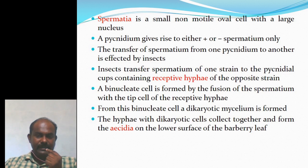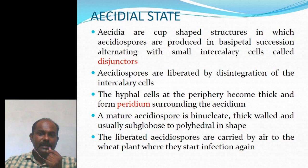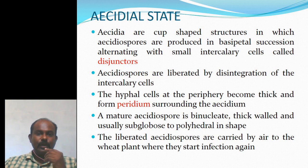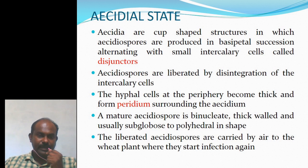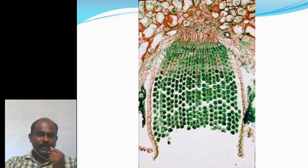The hyphae with dikaryotic cells collect together and form the aecia on the lower surface of the Barberry leaf. Aecia are cup-shaped structures in which aeciospores are produced in basipetal succession, alternating with small intercalary cells called disjunctors. Aeciospores are liberated by disintegration of the intercalary cells. The hyphae cells at the periphery become thick and form a peridium surrounding the aecium. A mature aeciospore is binucleate, thick-walled, and usually subglobose to polyhedral in shape. The liberated aeciospores are carried by air to the wheat plant where they start the infection again.